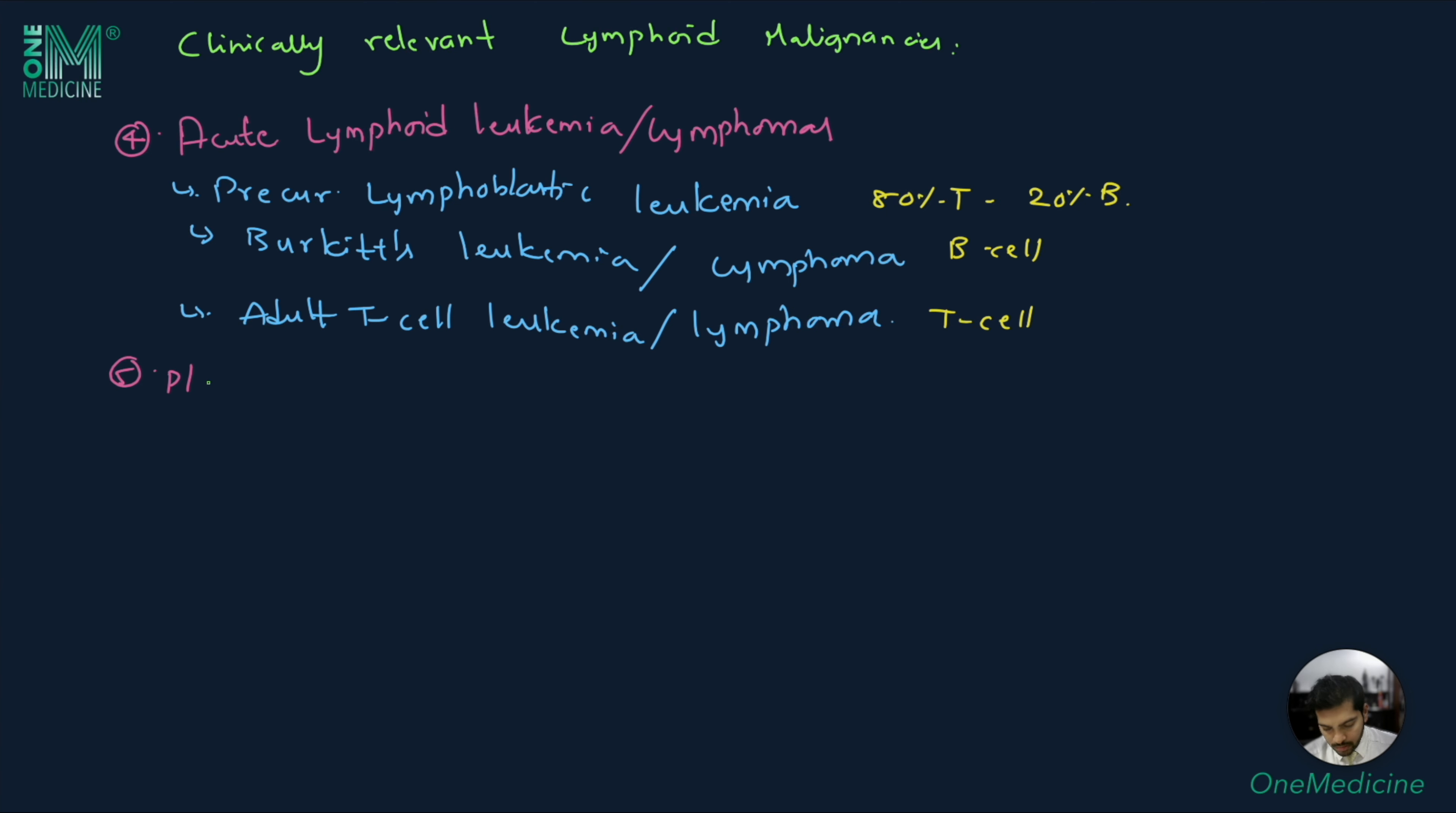Next type is plasma cell disorders. These are all of 100% B cell origin. These include monoclonal gammopathy of uncertain significance (MGUS), solitary plasmacytoma, extramedullary plasmacytoma, multiple myeloma, and plasma cell leukemia.